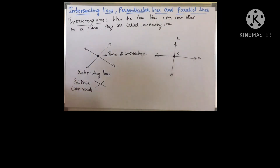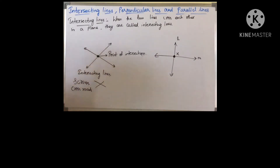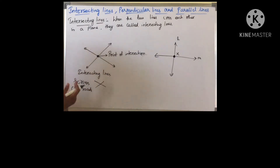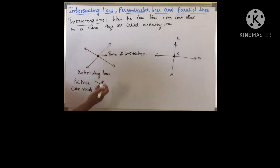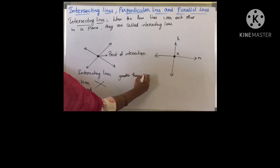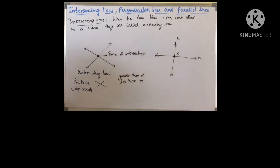So what are the properties of intersecting lines? The intersecting lines meet only at one point — they will always meet only at one point. The intersecting lines can cross each other at any angle. The angle formed is always greater than 0 degrees and less than 180 degrees. Two intersecting lines form a pair of vertical angles.